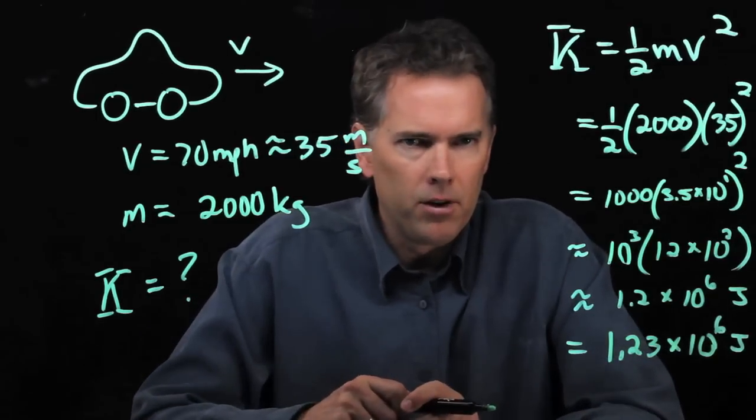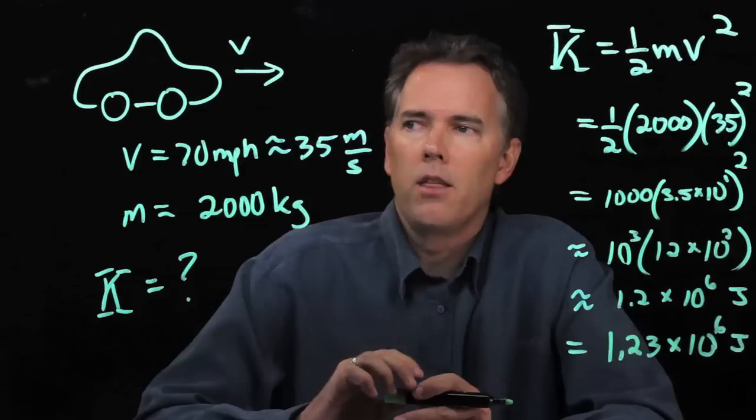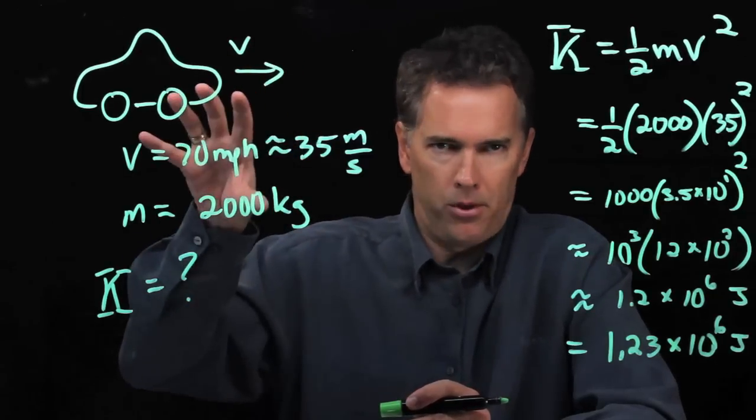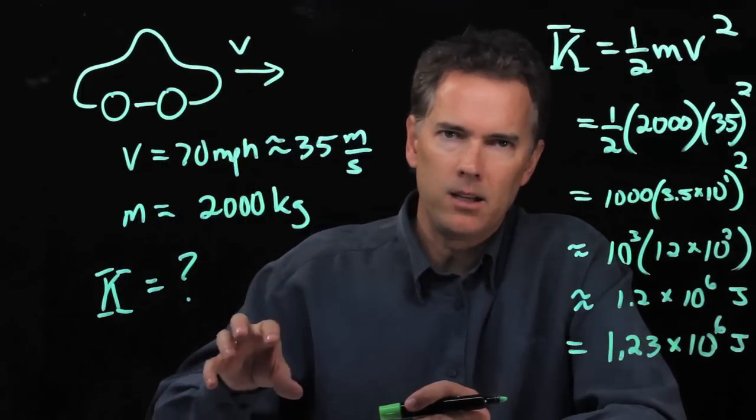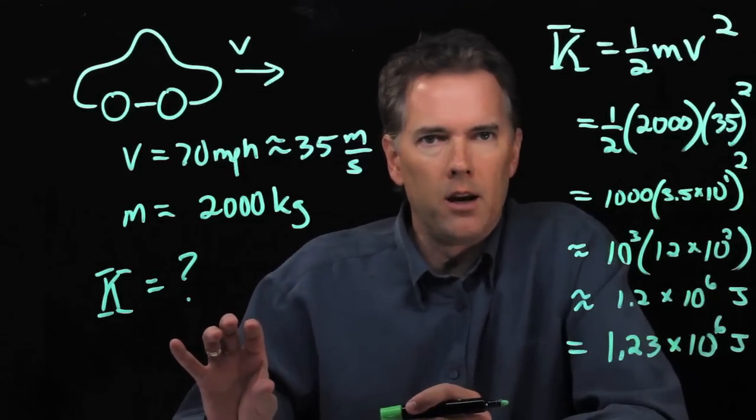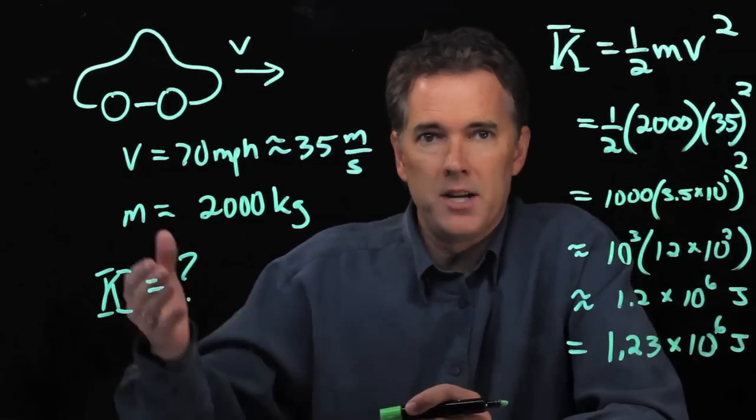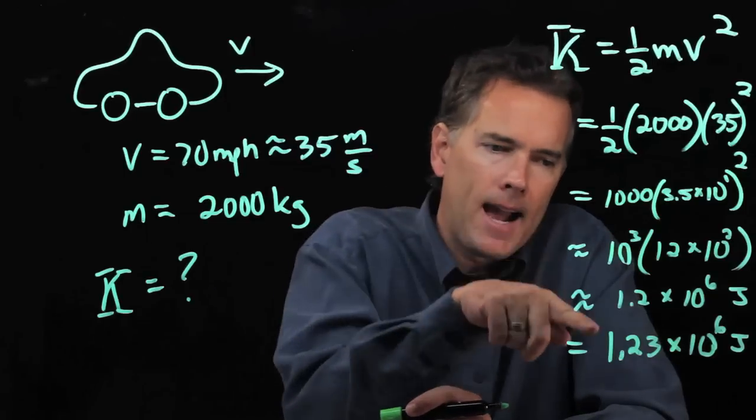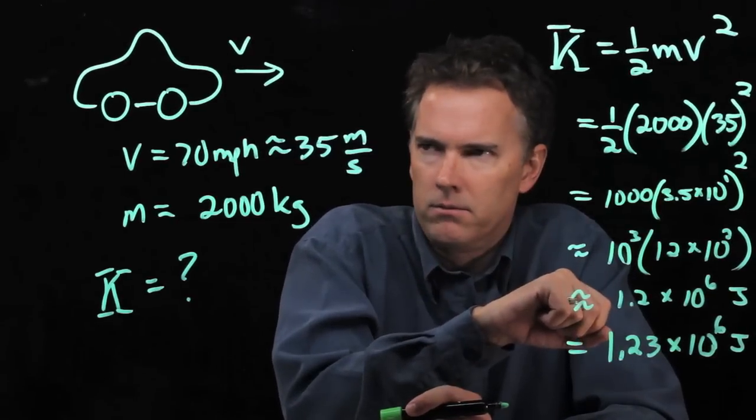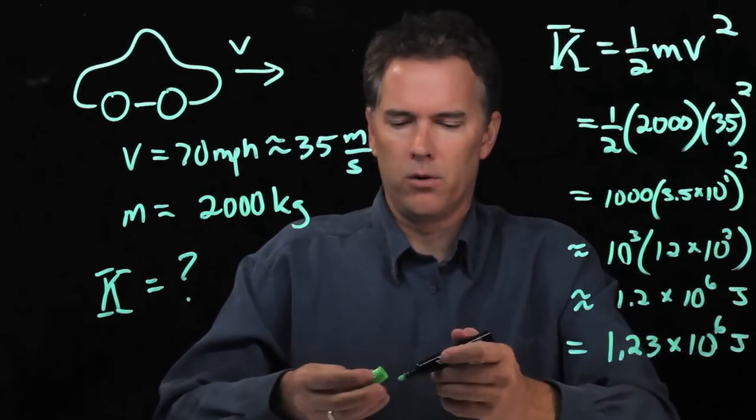Now let's ask a follow-up question. Let's say that we're going to drop the car from some height straight down such that we want the gravitational potential energy, mgh, to be exactly equal to that. Let's see what that height would correspond to.